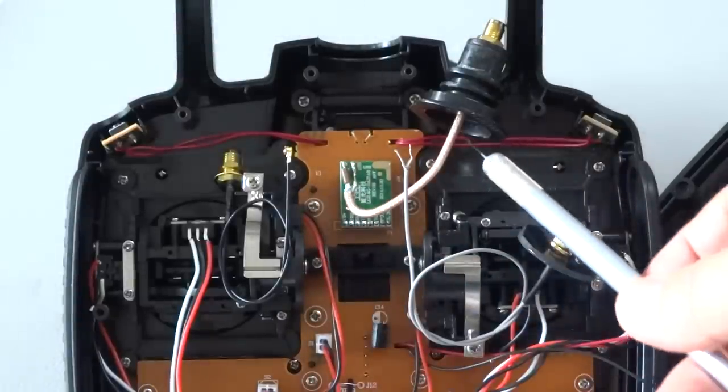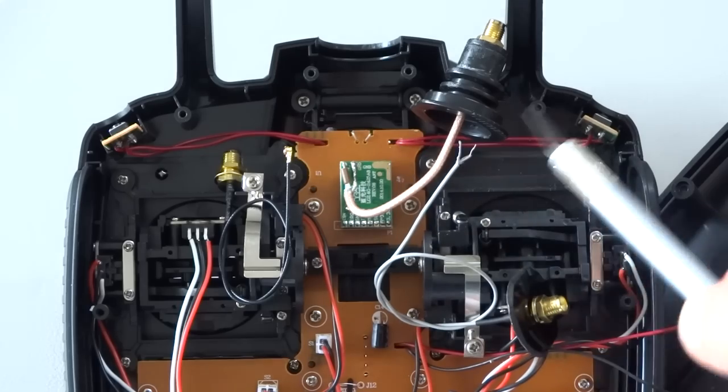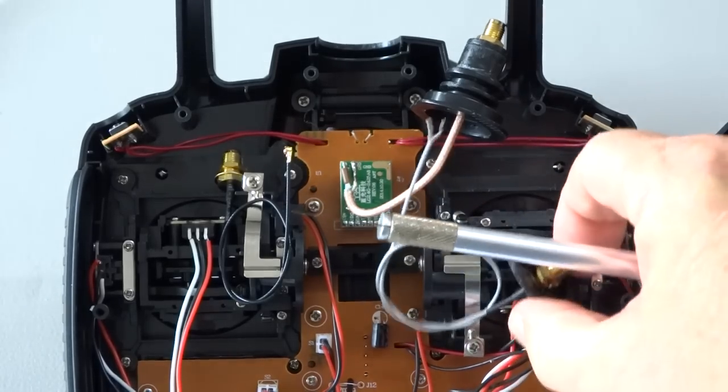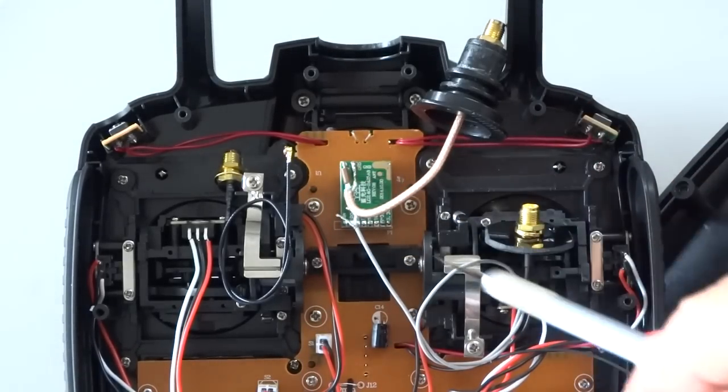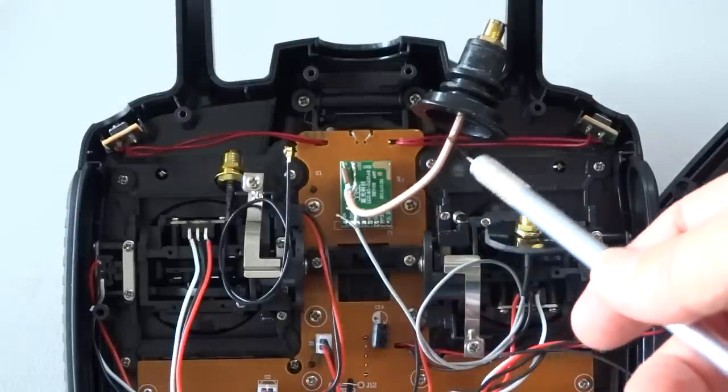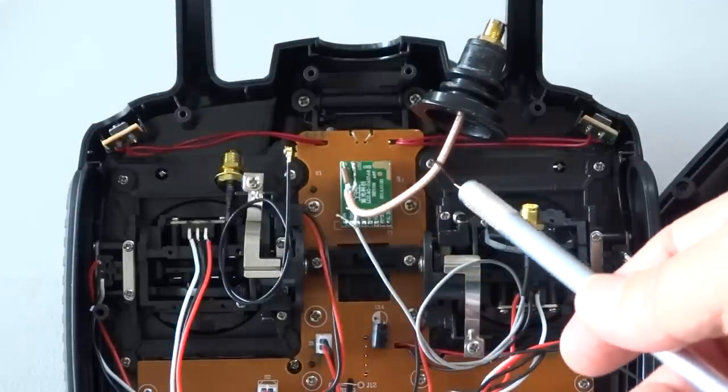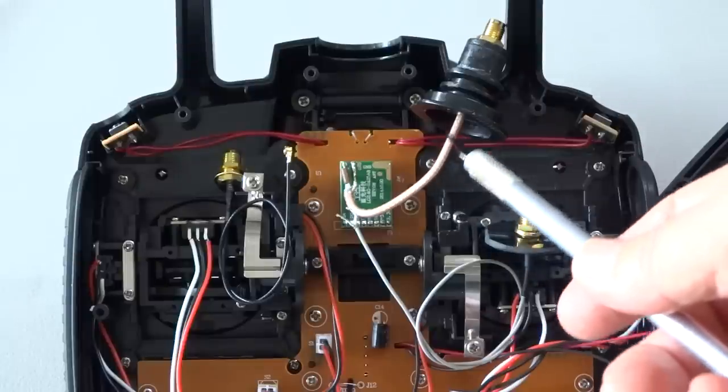This particular coax is a bit thicker than the ones here. You can see I've just set that there to show you the difference in thickness. This one here you can't get on Banggood. I had to go on eBay to get this particular one.